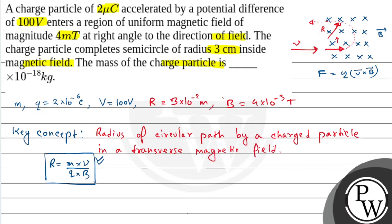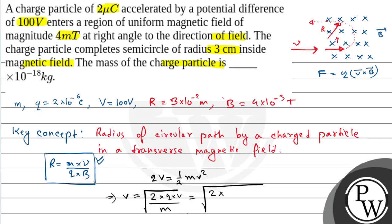From energy conservation, we know that the energy done is q into V, which converts to kinetic energy equal to half into m times v squared. So v is equal to root over of 2 into q into V divided by m. This gives root over of 2 into 10 to the power minus 6 into 100 divided by m, which equals root over of 4 into 10 to the power minus 4 divided by m.